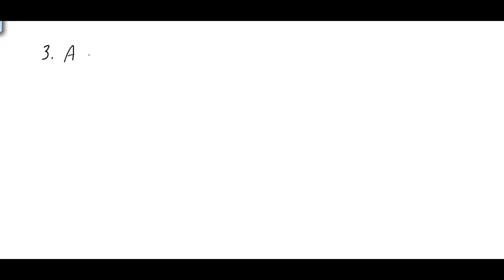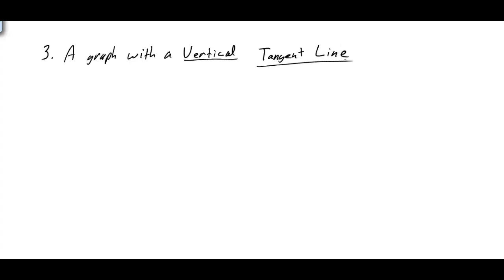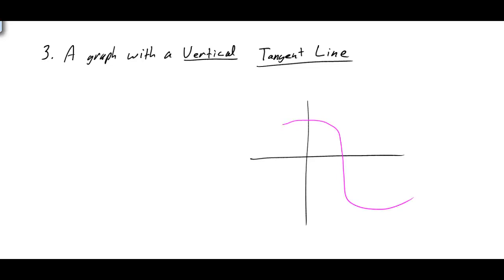The third situation is if you have a graph with a vertical tangent line. An example of this would be if your graph looks something like this, and at this particular point your tangent line is vertical. We know that if you have a vertical tangent line, your slope is undefined. Therefore, if it's undefined, that means we cannot have a derivative at that point.